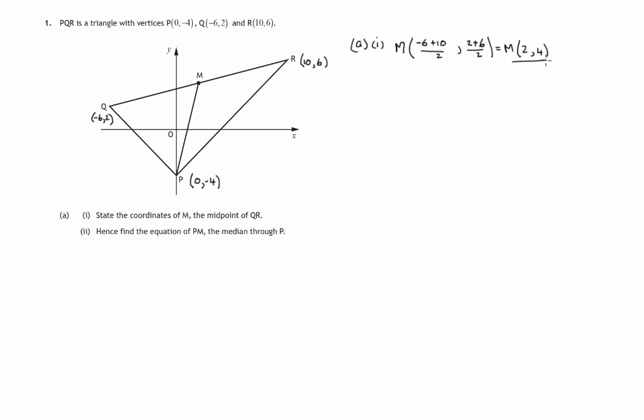So M is the point 2, 4. Let's add that information to our working diagram. Second part of section A: Hence find the equation of PM, the median through P.